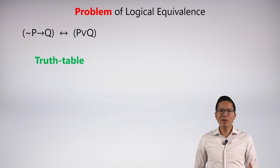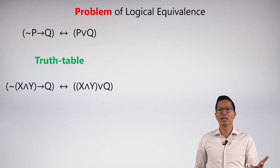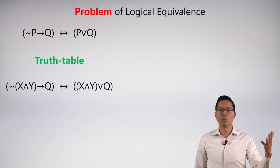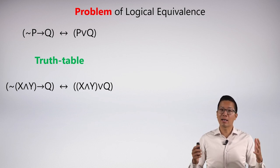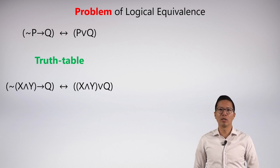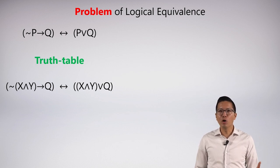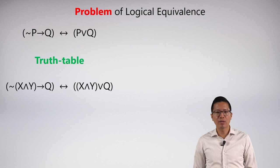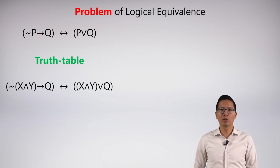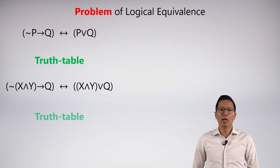But I haven't proven this in general. What about this statement? It has the same logical form as the one on top. Can I say they are logically equivalent in virtue of the fact that the top one is? The answer is no—they're different, there's another connective there. How would I prove they're logically equivalent? I would just do another truth table. Well, what about this statement?